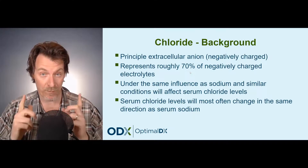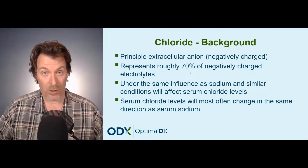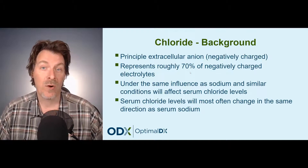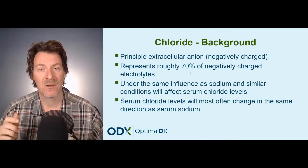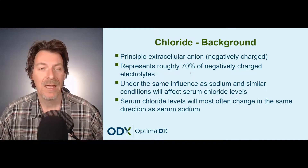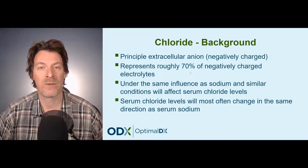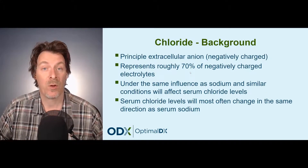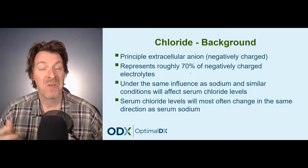Now the same thing is true for chloride. The kidneys hold on to chloride. We get a decrease in urinary chloride, and this is something we can actually measure in the urine. Aldosterone will cause the body to hold on to chloride, and therefore we get increasing chloride levels.